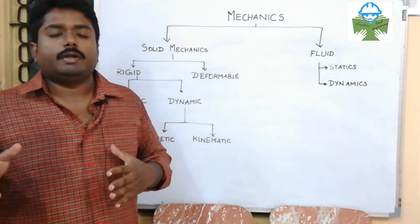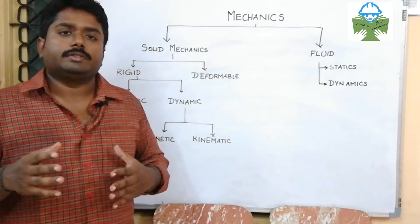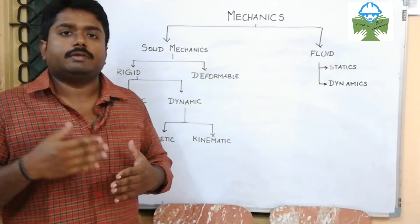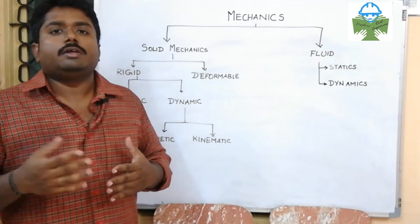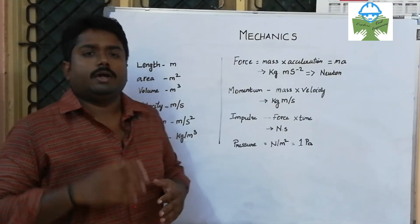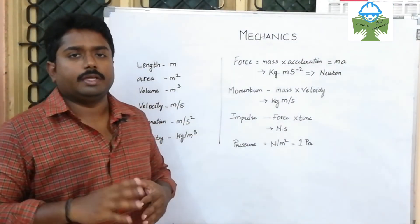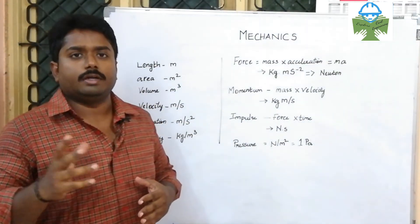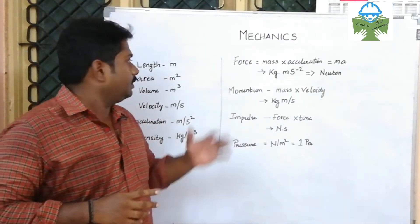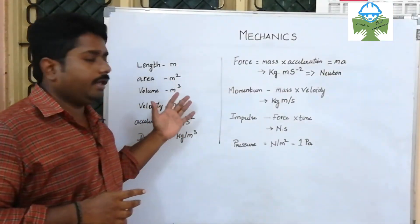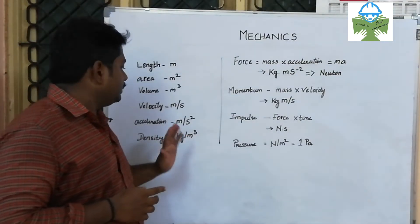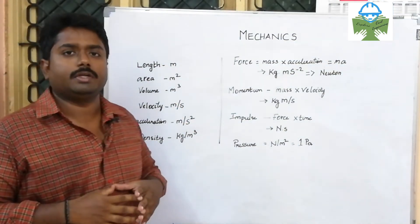The fourth unit covers dynamics of the rigid body and friction. Units and dimensions are fundamental — the basic quantities include length, area, volume, velocity, acceleration, and density.